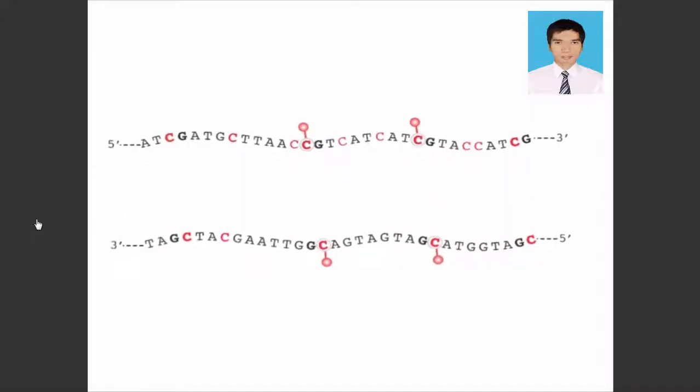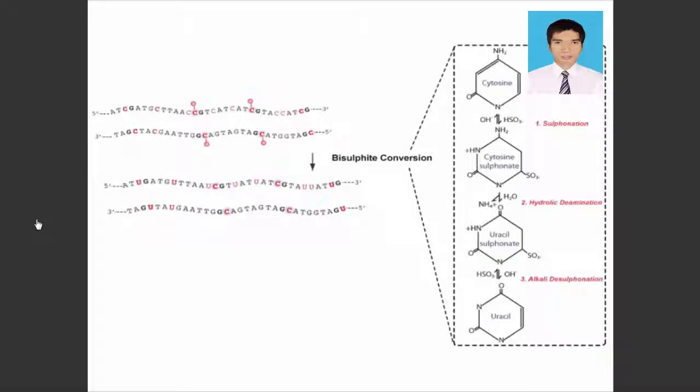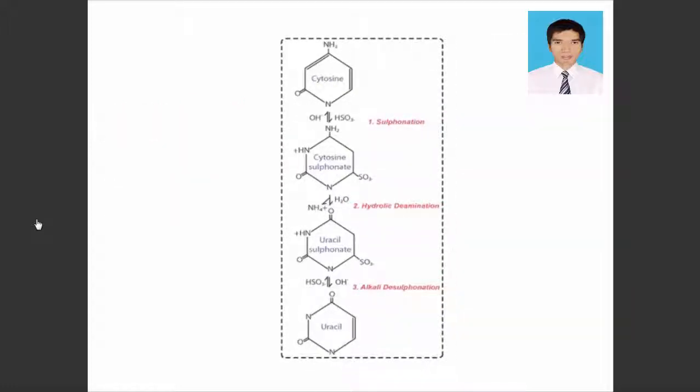This is accomplished by first denaturing the double-stranded DNA so that the bisulfite conversion reaction can take place. The second step is to convert all of the unmethylated cytosines in the genomic DNA to uracil by bisulfite deamination. This reaction involves three phases.